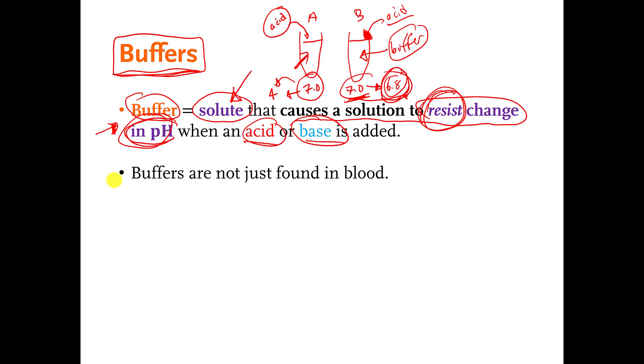So buffers are not just found in blood, they're found in a lot of things. Most other parts of living organisms also need buffers like your cells need to, they can only stay alive if they stay within a certain pH range. So your cells are also buffered.